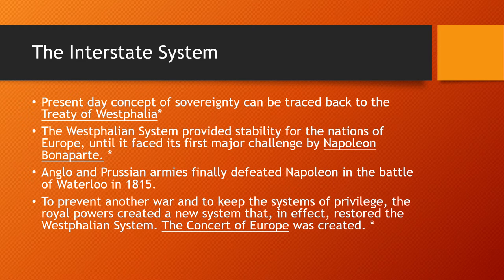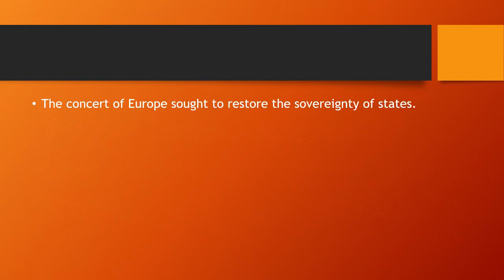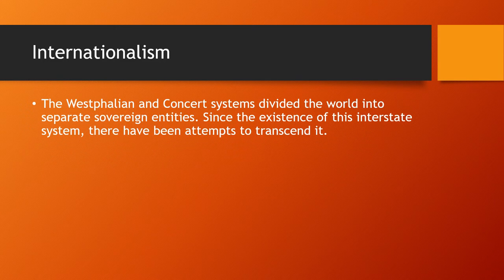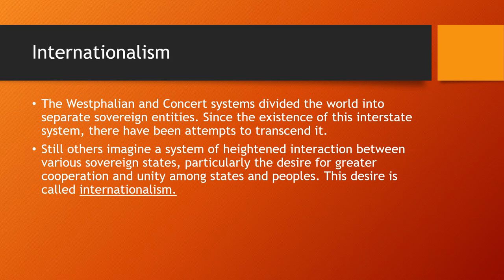For example, in the United Nations Security Council, there is a P5 — we will discuss that further in the next chapter. The Concert of Europe sought to restore the sovereignty of states, and its authority lasted from 1815 to 1914. The Westphalian and Concert systems divided the world into separate sovereign entities. Since the existence of this interstate system, there have been attempts to transcend it — others imagined a system of heightened interaction between various sovereign states, particularly the desire for greater cooperation and unity. This desire is called internationalism.